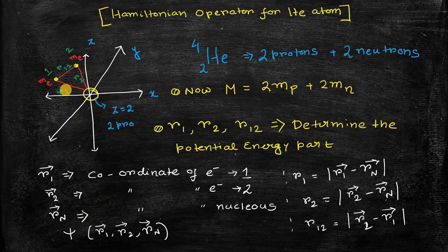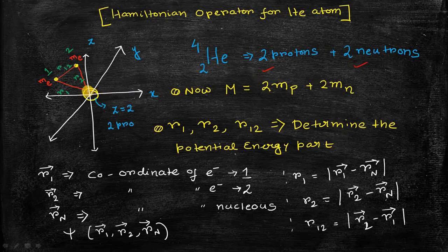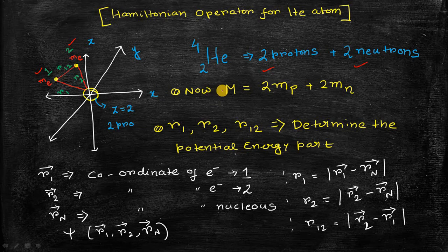This is a simplistic picture of the quantum mechanical model for the helium atom. The nucleus is at the origin and is assumed to be fixed there. In the case of helium atom, there are basically two protons and two neutrons at the nucleus. There are two electrons rotating around this nucleus — electron one and electron two, both having mass Me. The mass of the nucleus equals two times the mass of the proton plus two times the mass of the neutron.